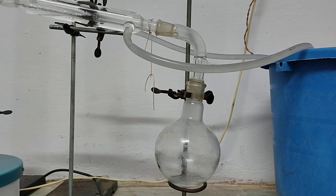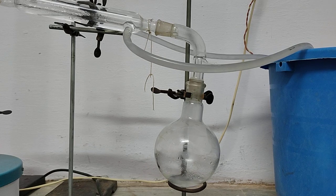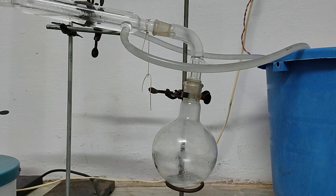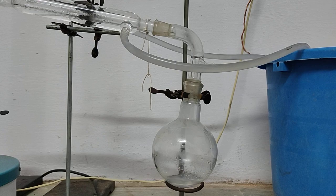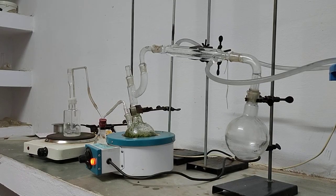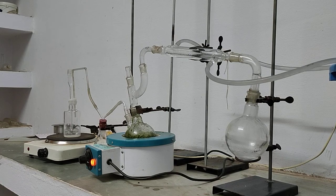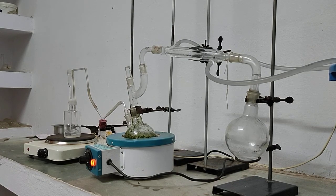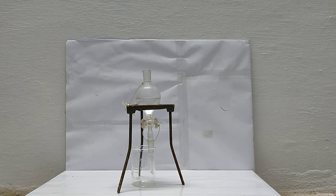Water along with essential oil of tulsi is collected in the receiver flask, which can be separated by separating funnel. Two layers will be formed and can be separated.